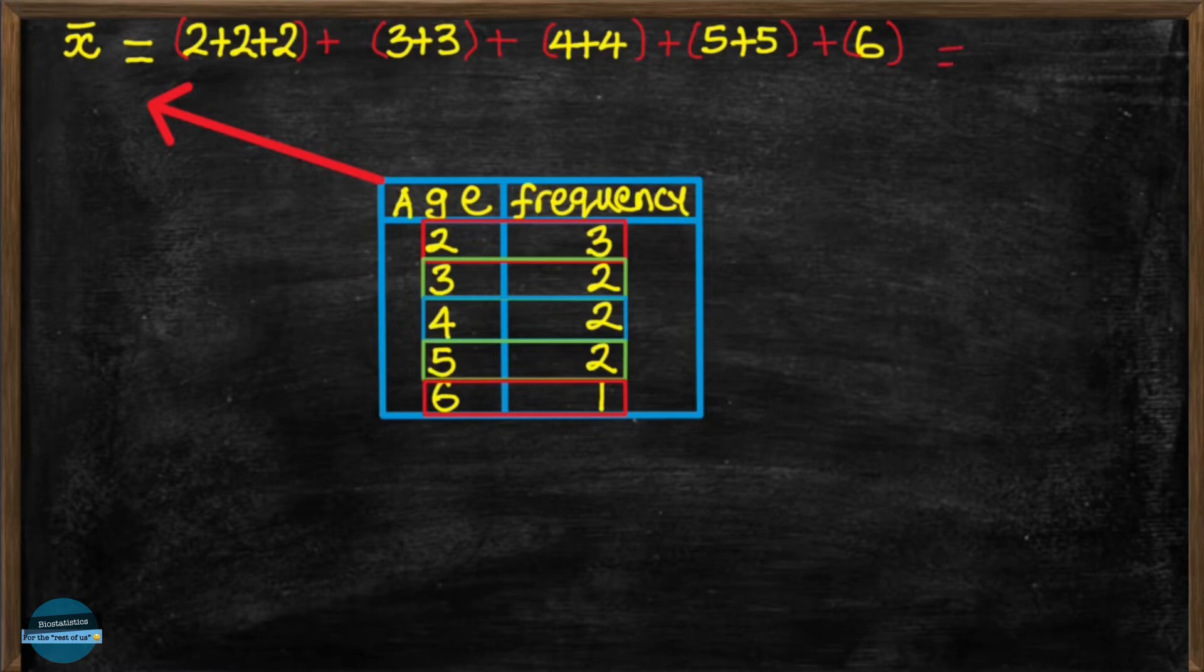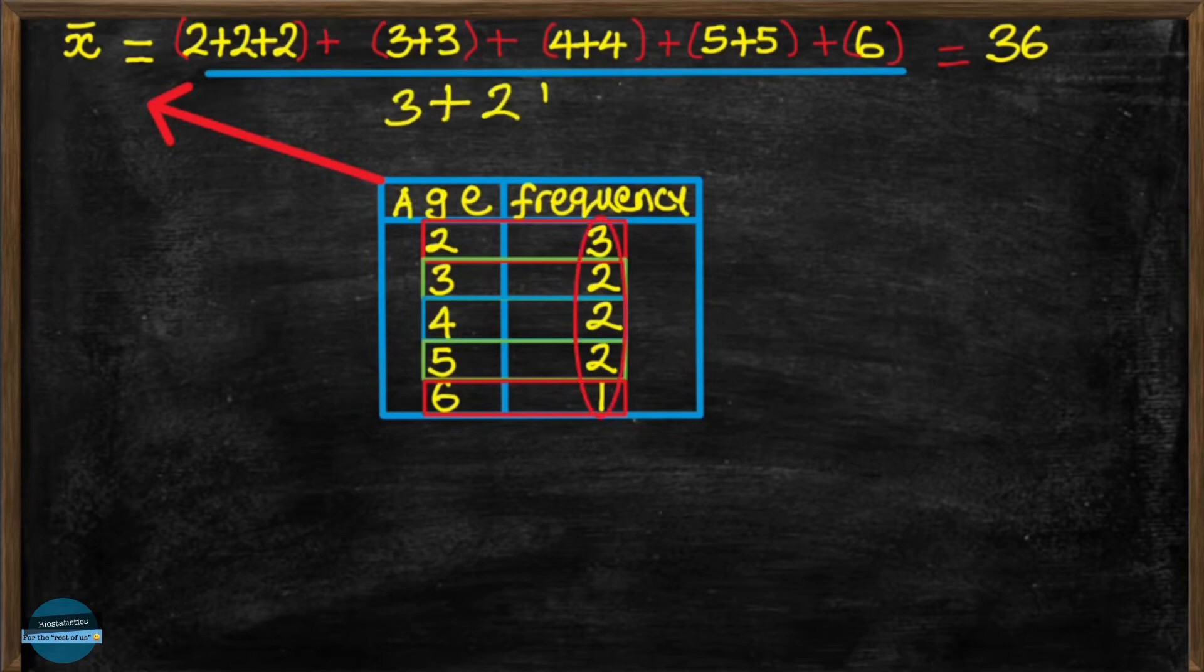Then we'll get 36. And now we divide by the total number of values, which is the sum of all the frequencies. So we say 3 plus 2 plus 2 plus 2 plus 1, which is equal to 10. Thus we have 36 divided by 10, and we'll have our 3.6. Awesome.